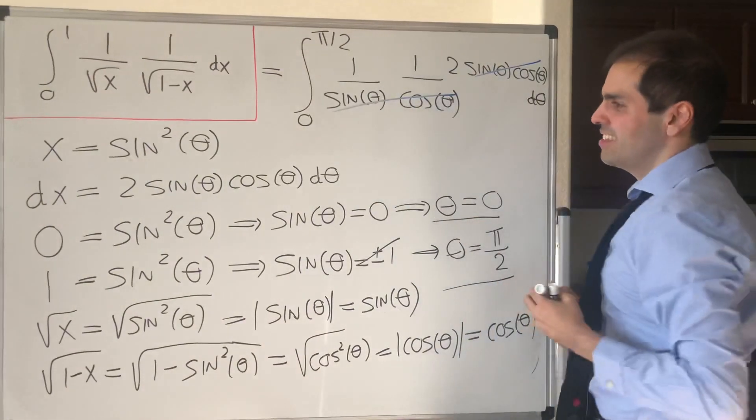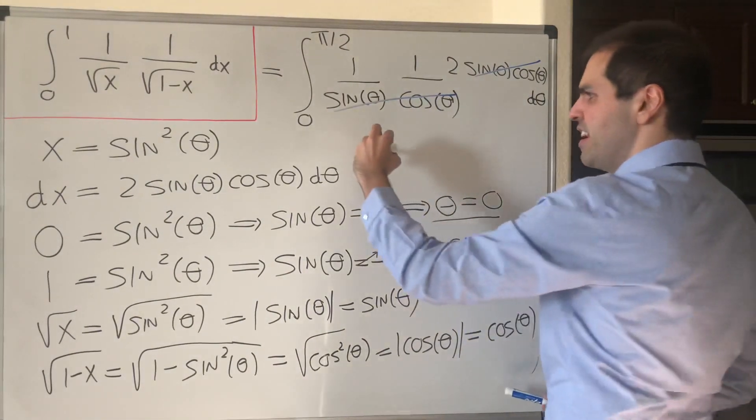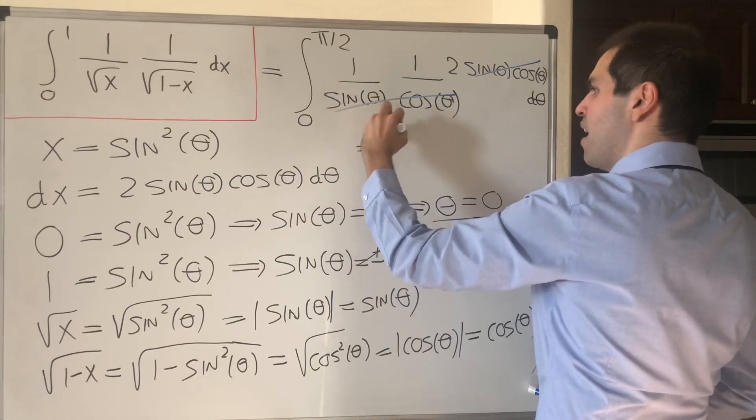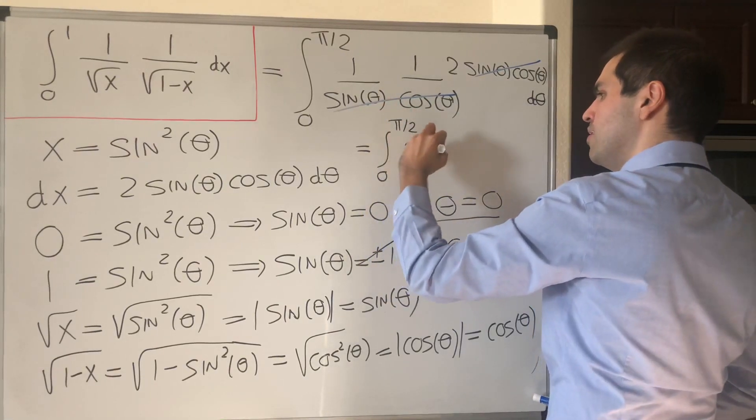Bang bang, this simplifies, and so in the end you're left with the integral from 0 to pi over 2 of 2 d theta.